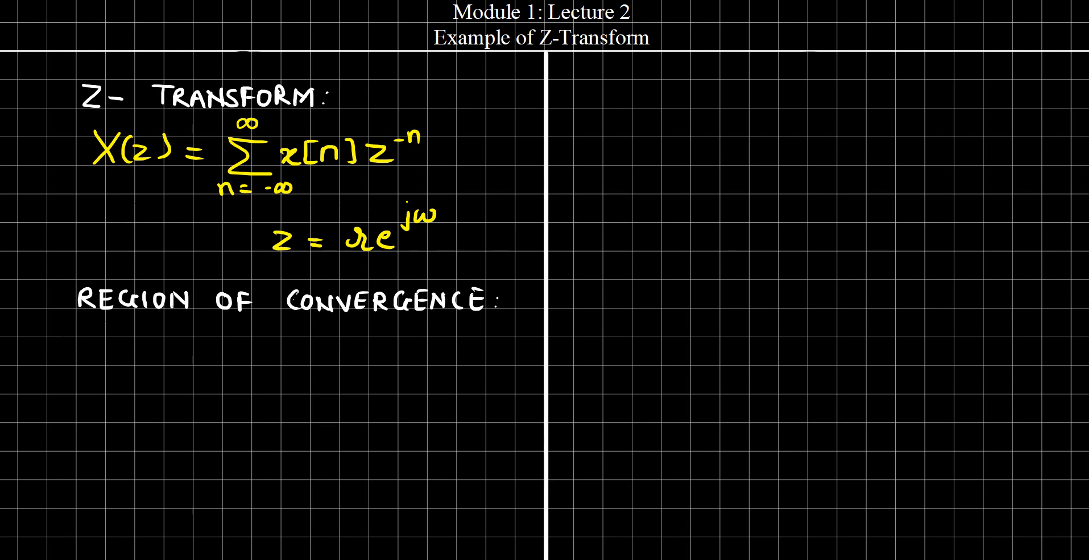We have also seen an important concept of region of convergence, which is defined as the values of R which is equal to mod of z for which X(z), that is the Z-transform, is finite. In other words, the values of mod of z for which X(z) converges.